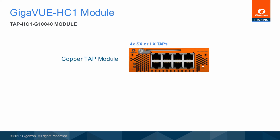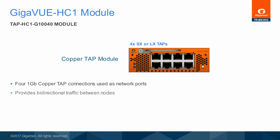The TAP HC1-G10040 module provides four 1-Gigabit copper tap connections to be used as network ports. This module has eight ports, enabling four taps. Each port pair is arranged with one port above the other, providing bi-directional traffic flow between two nodes. These ports can be configured as inline network ports, allowing this module to act as a copper bypass module, providing protected inline networks for copper ports.